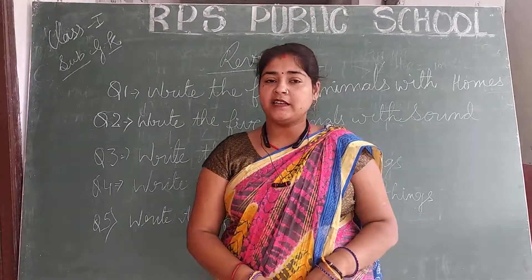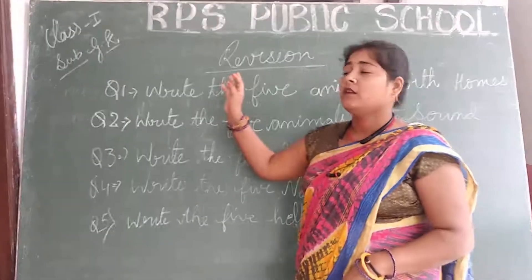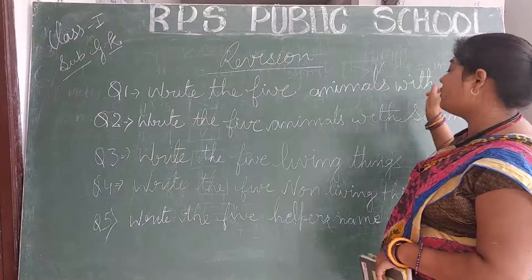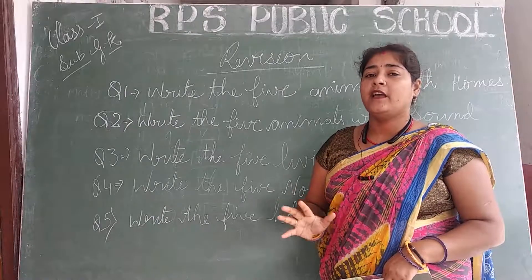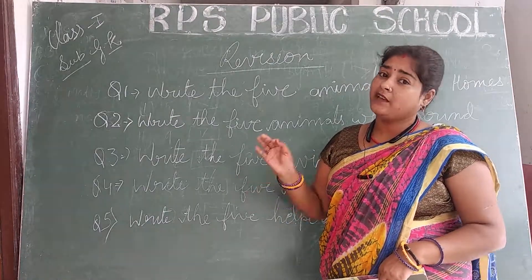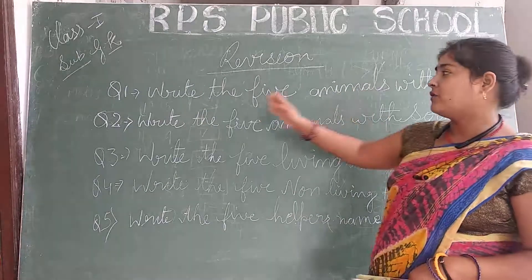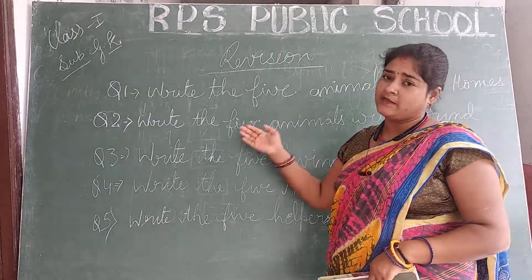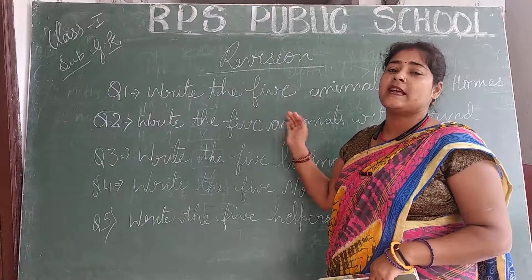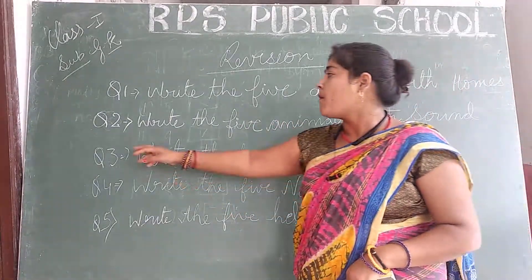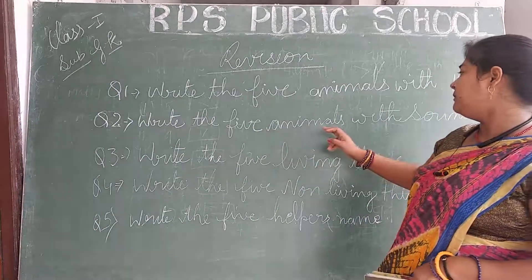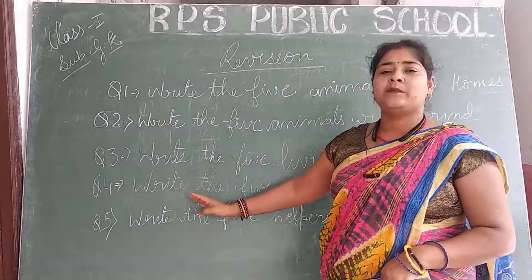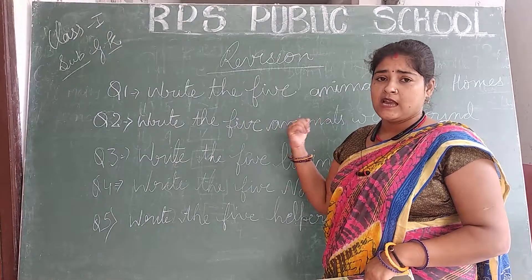Now you can take out your copy, pencil, and eraser and see the board. Revision class — write the 5 animals with their homes. Students, write 5 animals. On one side write the name of the animal and on the other side write the name of the animal's home, using two columns.